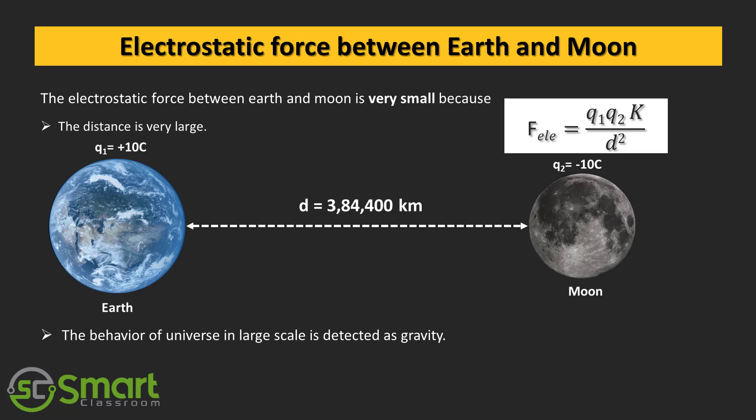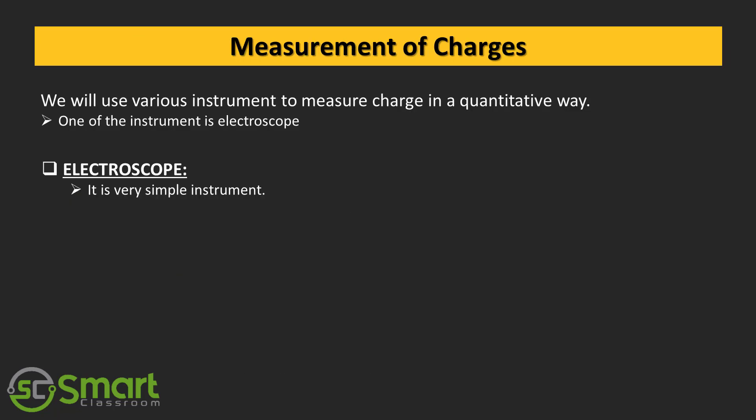The next topic: electrostatic force between earth and moon. Let us consider the earth and moon having charges of 10 coulomb. Take the earth has plus 10 coulomb and moon having minus 10 coulomb respectively. As per Coulomb's law, the electric force between two bodies is inversely proportional to d square. That means if we increase the distance double, then electric field will reduce by one fourth. In this case the distance between the earth and moon is very large, approximately 384,400 kilometers. If the distance is very large then the electric force between the earth and moon is very small. That's why the behavior of the universe in the large scale is dictated by gravity and the electric force between the earth and moon is almost negligible.